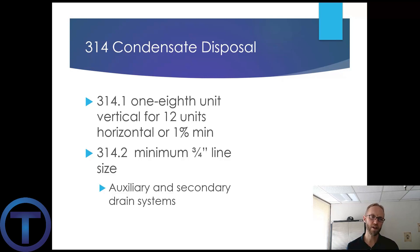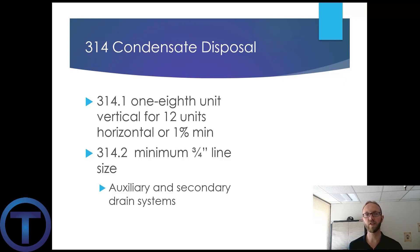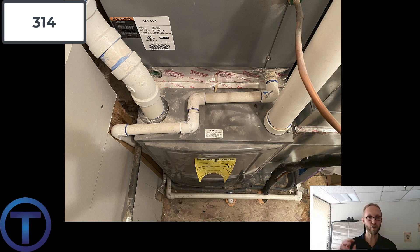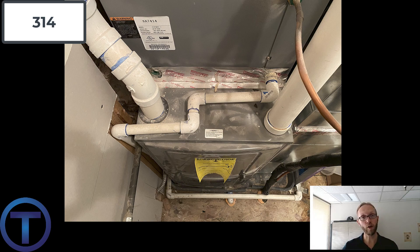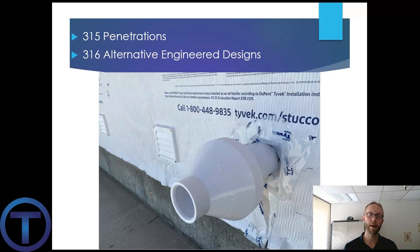Section 314 covers condensate disposal. The minimum slope for a condensate drain is 1%, which is one-eighth inch per foot (314.1). The minimum pipe size is three-quarter inch (314.2). Condensate drains are required to have both a primary and a secondary drain system — in case the primary drain gets plugged, the secondary pipe allows condensate to go to a safe location.